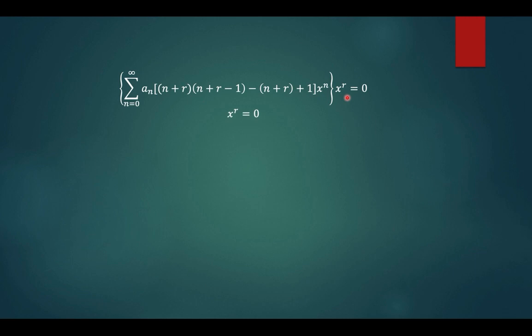Therefore x raised to r equals 0, so that can be eliminated or divided out. And then equate the coefficient to 0 since we have a homogeneous differential equation where the right-hand side is equal to 0. And a sub n is equal to 0 for n greater than or equal to 1.